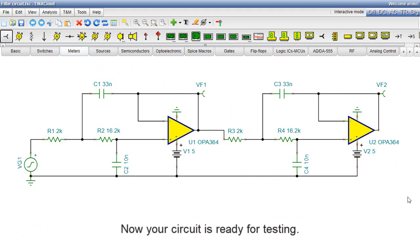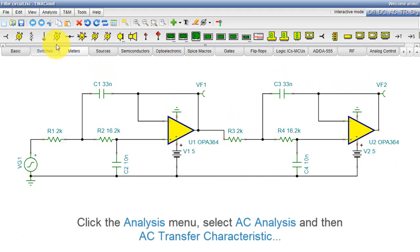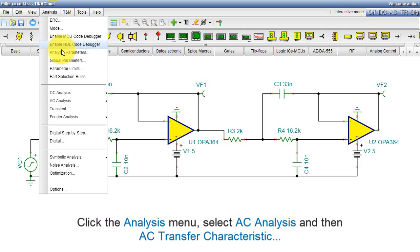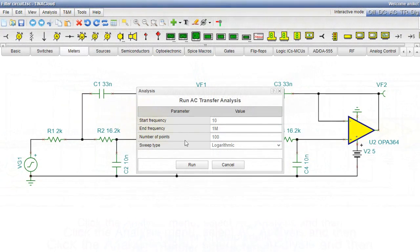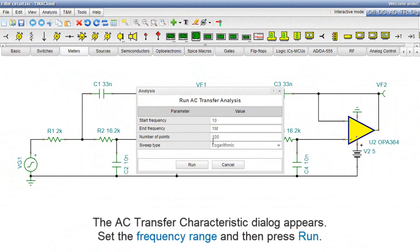Now, your circuit is ready for testing. Click the Analysis menu. Select AC Analysis, and then AC Transfer Characteristic. The AC Transfer Characteristic dialog appears. Set the Frequency Range, and then press Run.